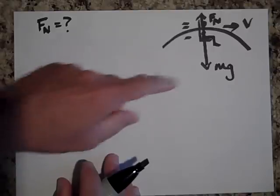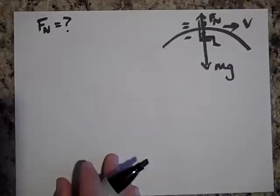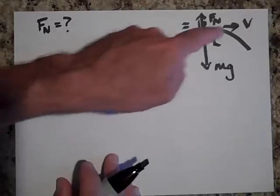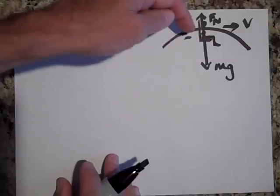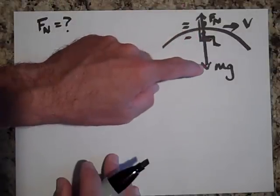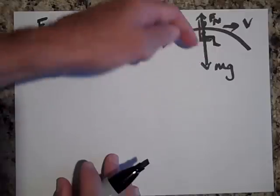Okay. Notice I made Mg bigger than Fn. That's because if you're here, if you're going in a circle. See the circle you're going in? You're accelerating toward the center. And so you need this to be the bigger force so that your net force is toward the center.